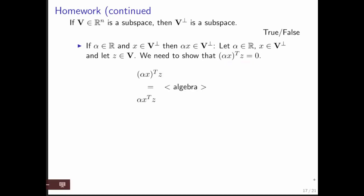But alpha x transpose z is equal to that. But we know that x transpose z, the dot product of x with z, is 0. So now you get alpha times 0, but you know that alpha times 0 is just 0. We conclude that alpha times x is also in V perp, and therefore we now know that V perp is actually itself a subspace.